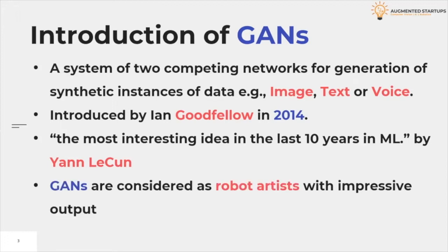GANs' potential for both good and evil is huge because they can learn to mimic any distribution of data. GANs can be taught to create worlds similar to our own in any domain — for example, images, music, speech, and prose. They are robot artists in a sense, and their output is impressive. But they can also be used to generate fake media content and are the technology underpinning deepfakes.